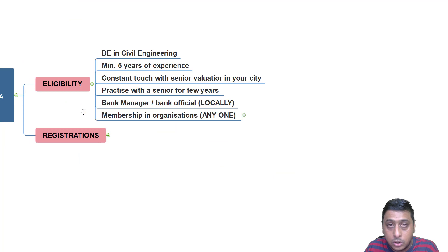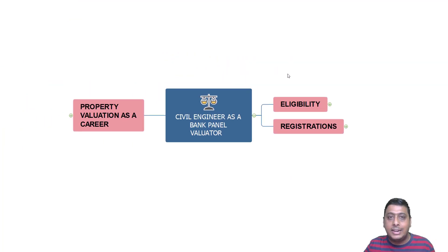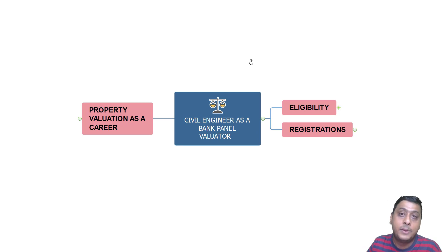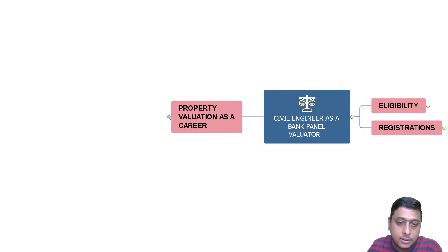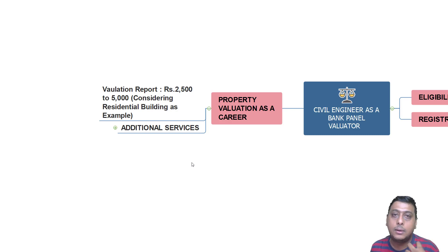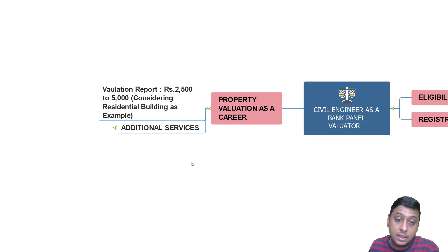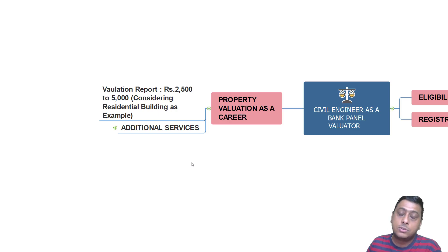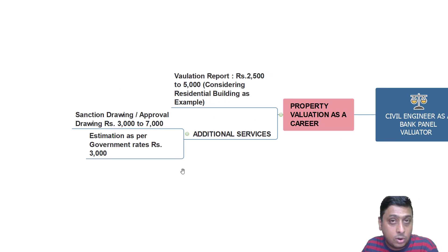As a bank panel valuer, how much are you going to earn? I have one more video in the description on how to earn one lakh rupees as a civil engineer every month. Along with that amount, you can add the panel valuator income too and earn a huge amount. For property valuation as a career, we charge anywhere between 2,500 to 5,000 rupees for a simple residential building — the time involved in site visit, measurements, and preparation of the report is not more than two to three hours.